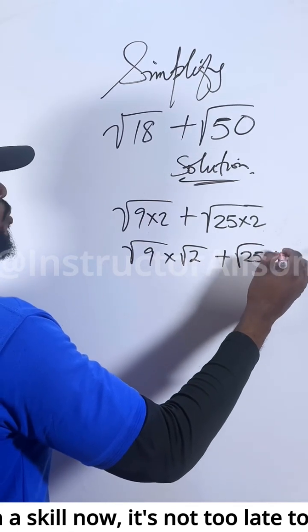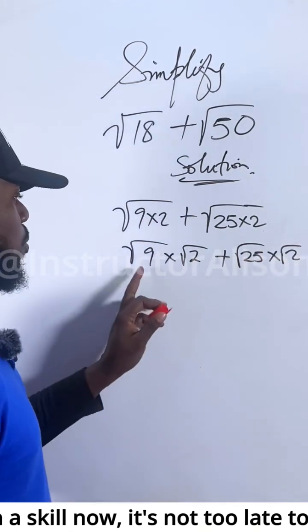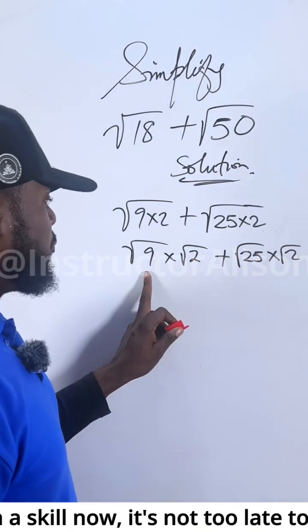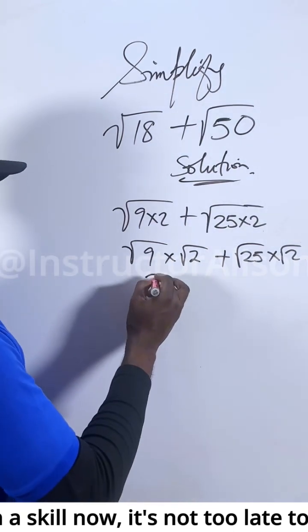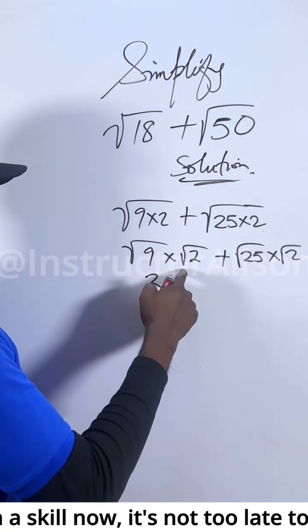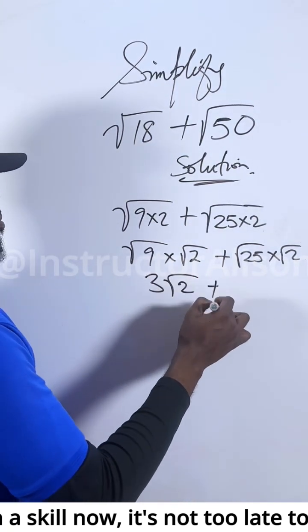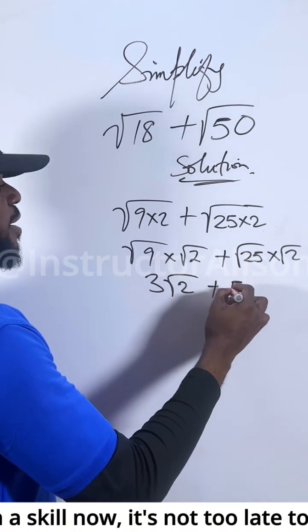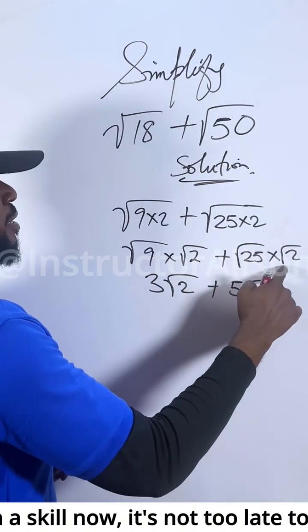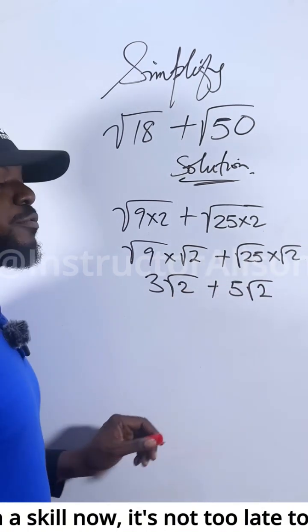We write it as the square root of 9 times the square root of 2, and according to the rules, the square root of 25 times the square root of 2. The square root of 9 gives you 3, so 3 multiplied by the square root of 2 gives 3√2. The square root of 25 gives you 5, and 5 multiplied by the square root of 2 gives 5√2.